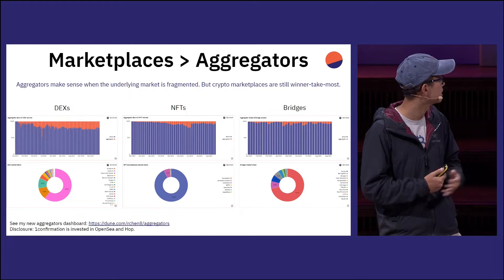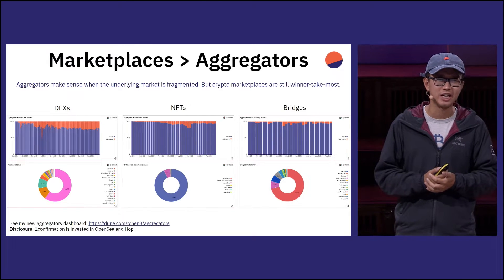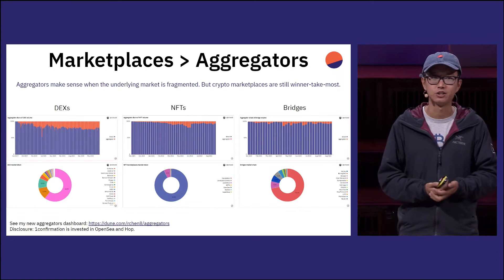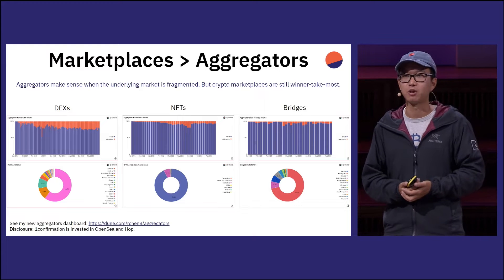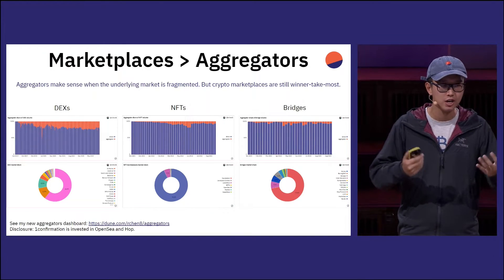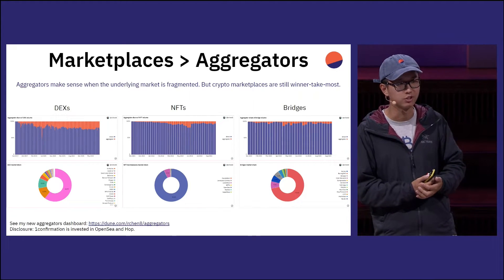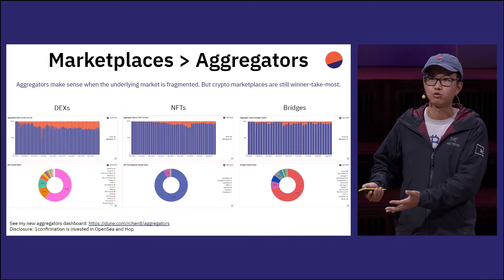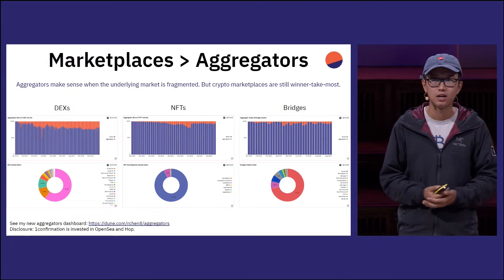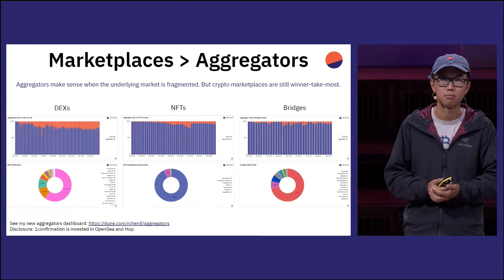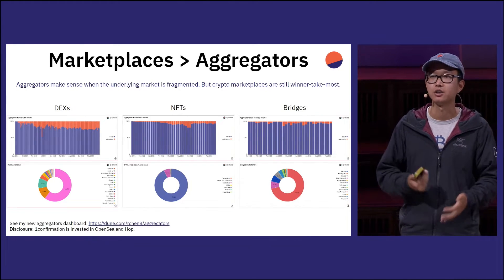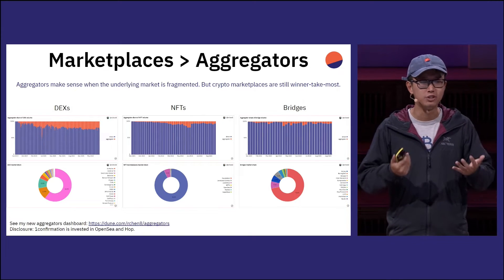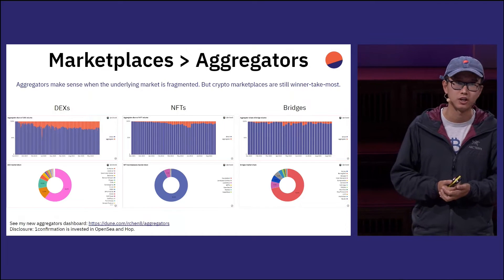You can see this trend across three different verticals. For DEXs, DEX aggregators are about 20-25% market share — surprising given how DEXs have been around since 2018 and you'd expect the DEX market to be pretty fragmented. But Uniswap is still 60-70% market share of all DEXs. As a result, front ends will integrate Uniswap contracts directly rather than the aggregator contract, or retail users will just keep using the Uniswap interface out of habit, not getting necessarily a better price from routing to an aggregator.